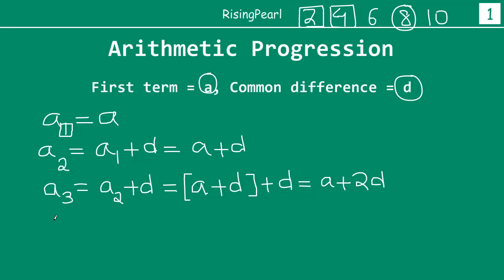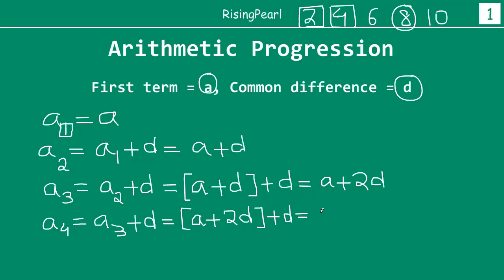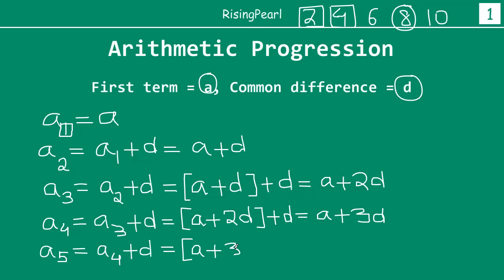Similarly, A4 will be equal to A3 plus D. A3 is A plus 2D, so A4 equals (A plus 2D) plus D, which is A plus 3D. For the fifth term, we take the fourth term and add D: A5 equals (A plus 3D) plus D, which becomes A plus 4D.